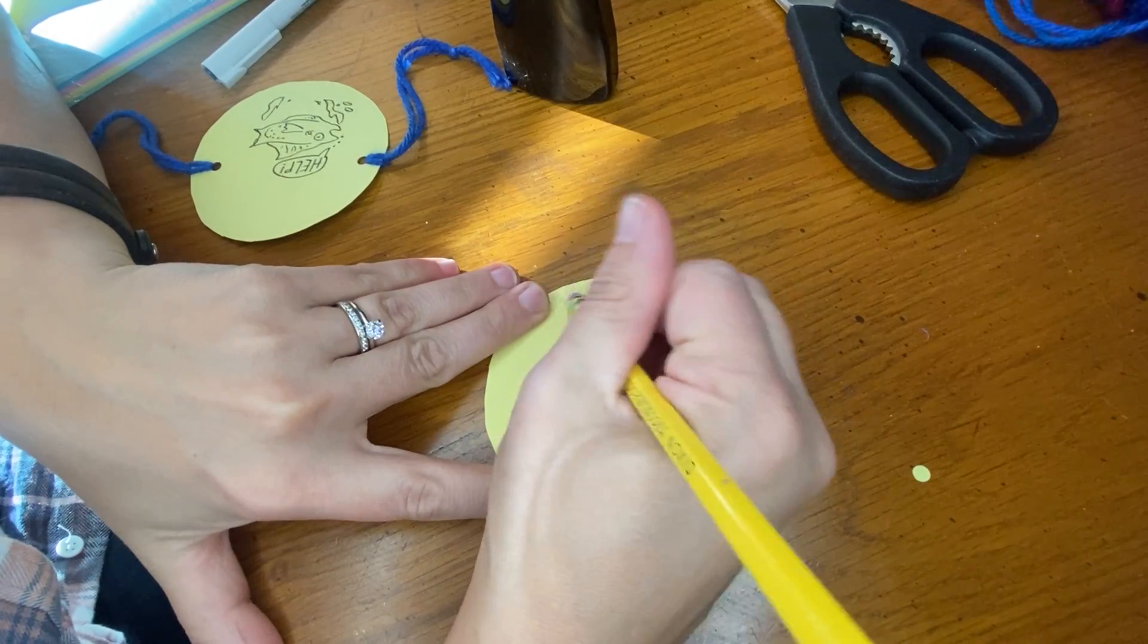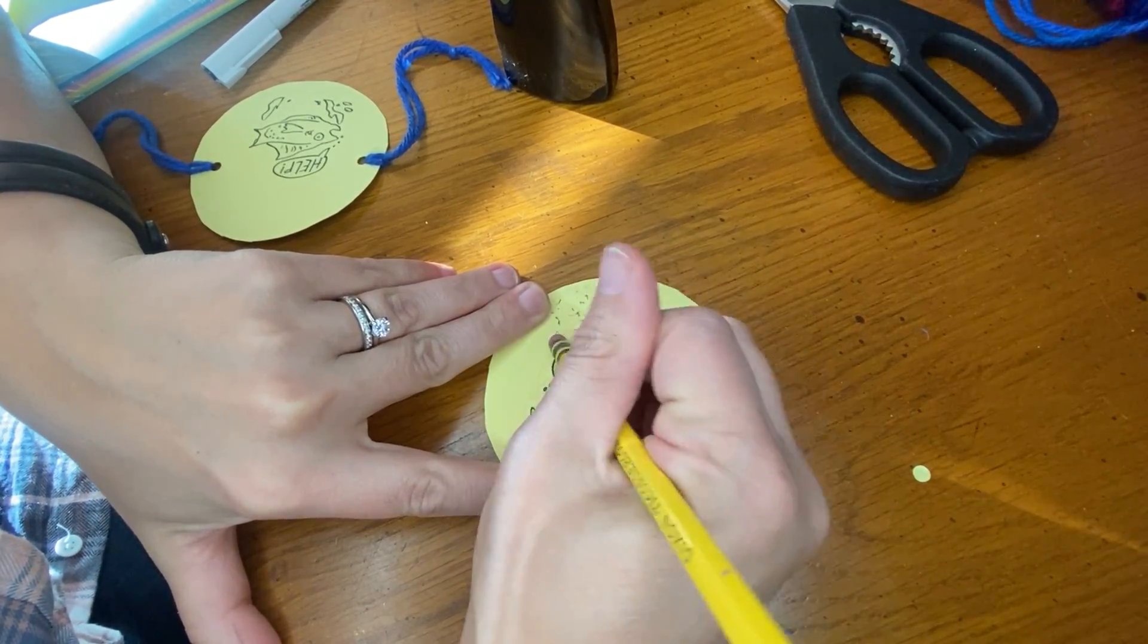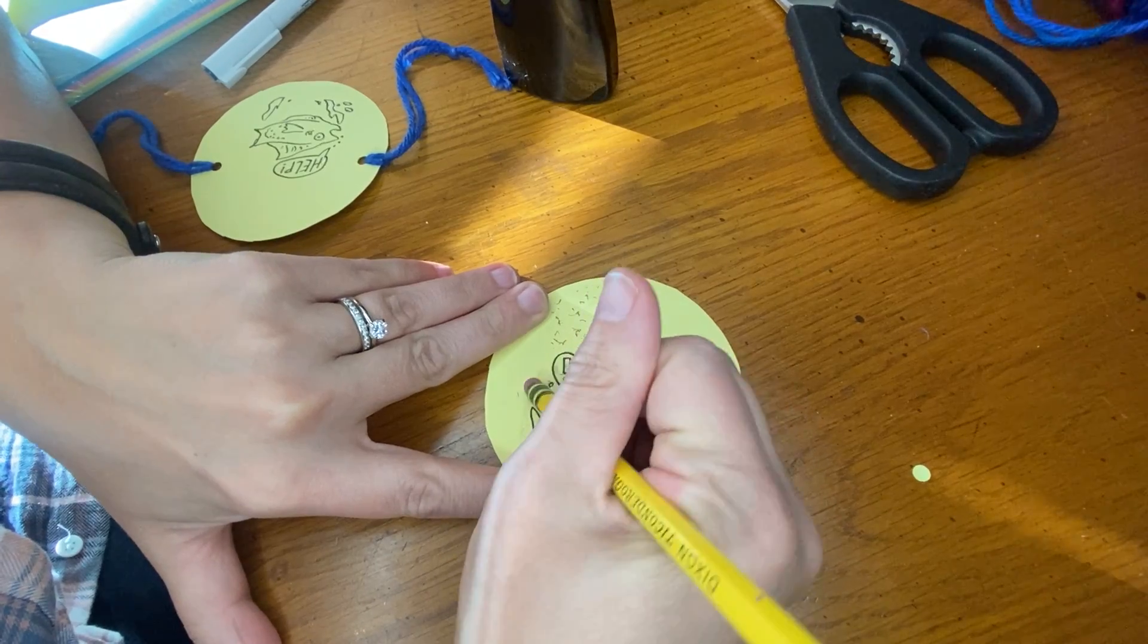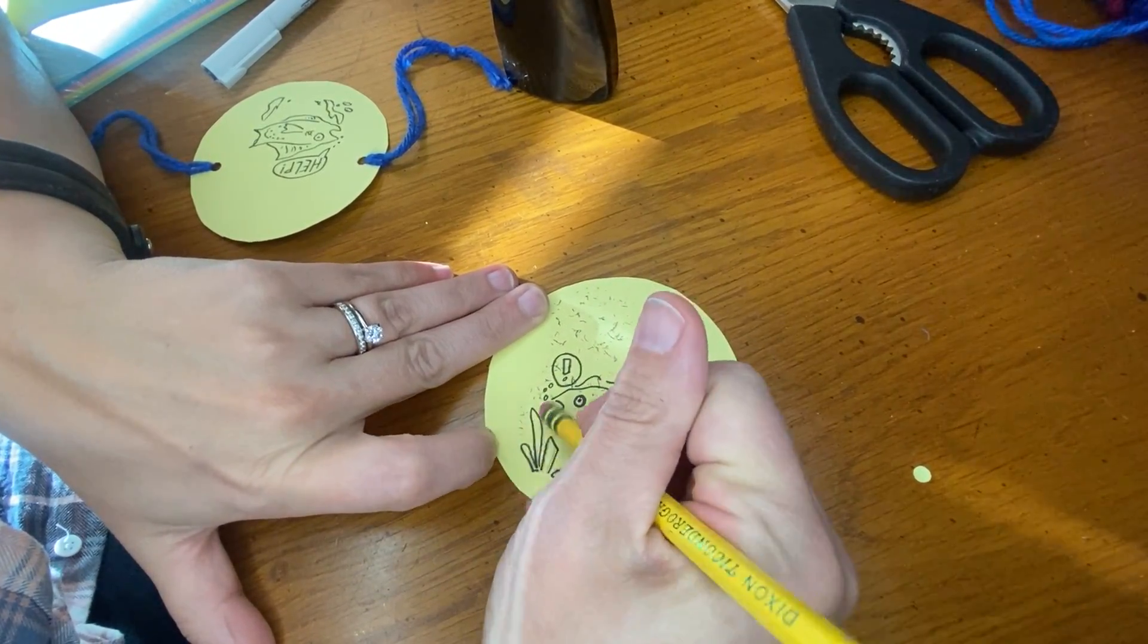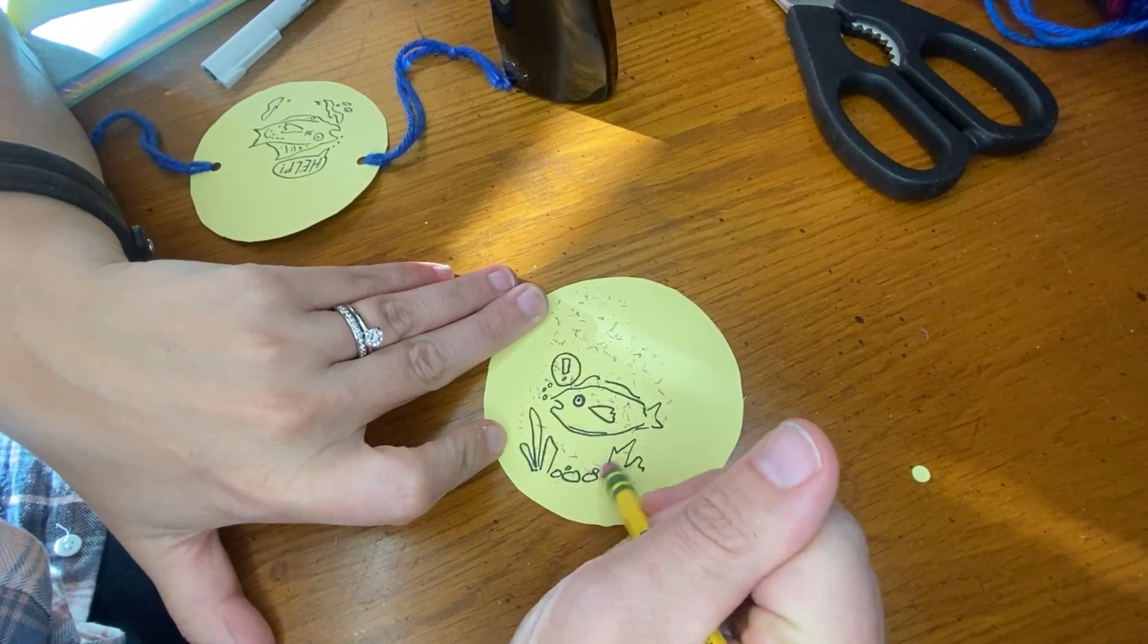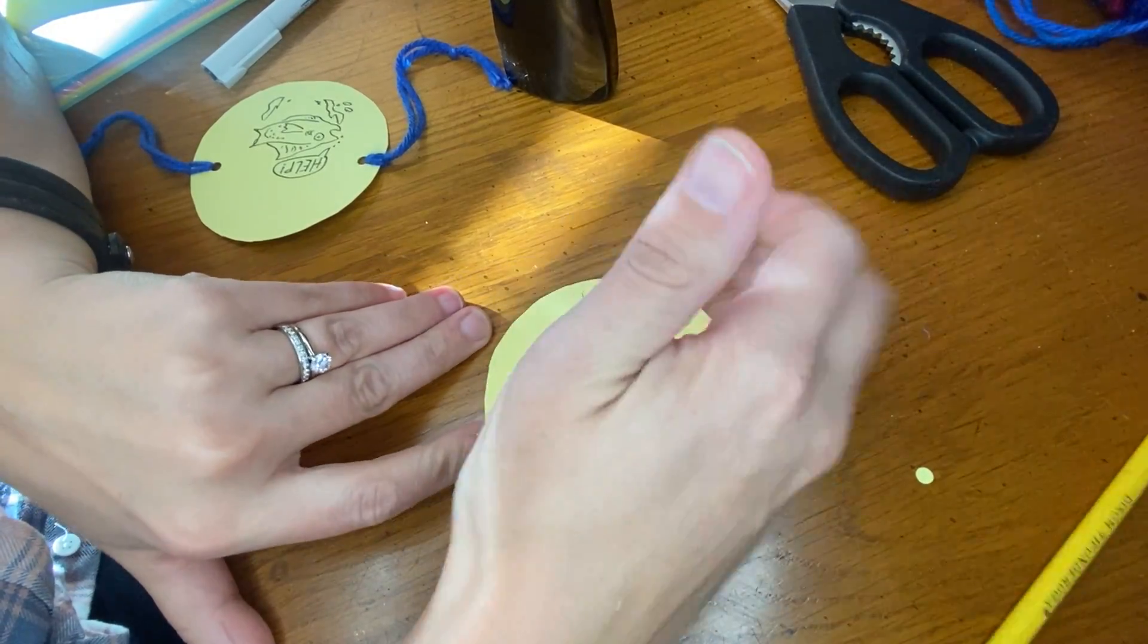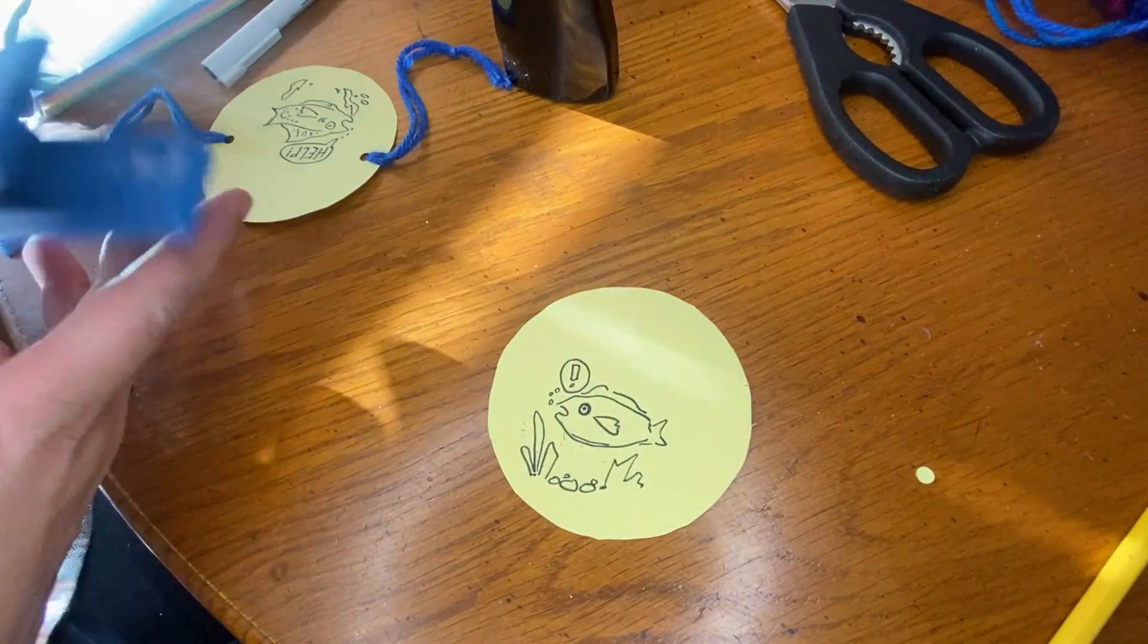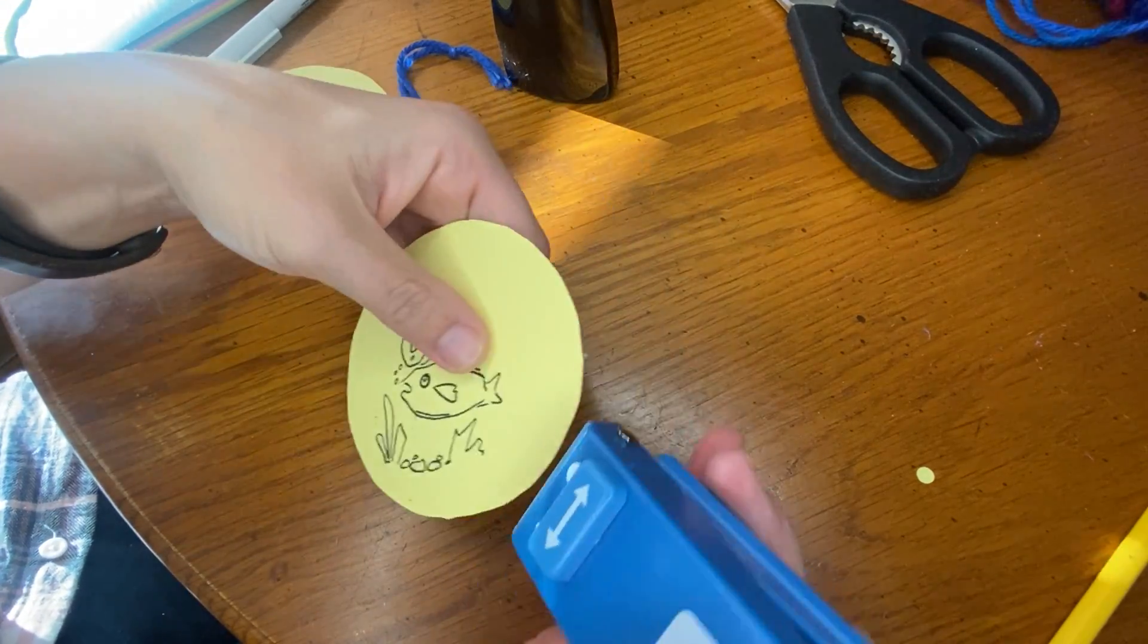Okay. So now I'm going to take my pencil, erase any pencil lines. Okay. And then I'm going to take my hole puncher and I'm going to punch a hole on either side.